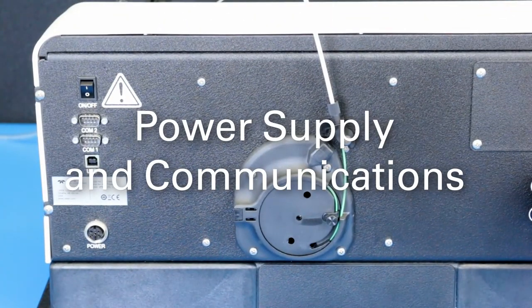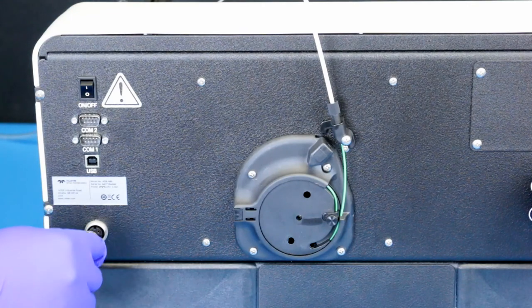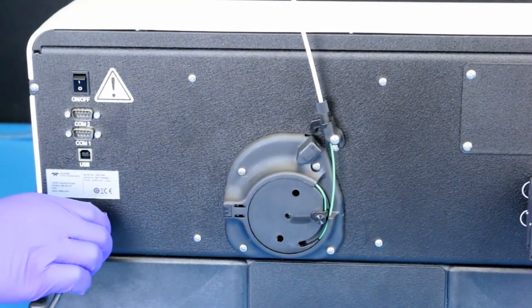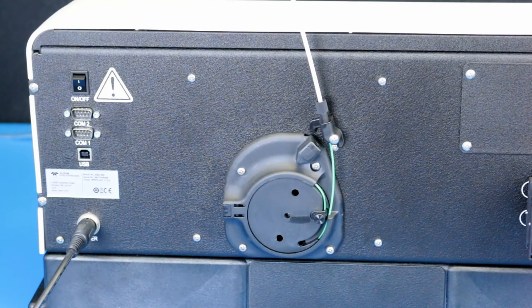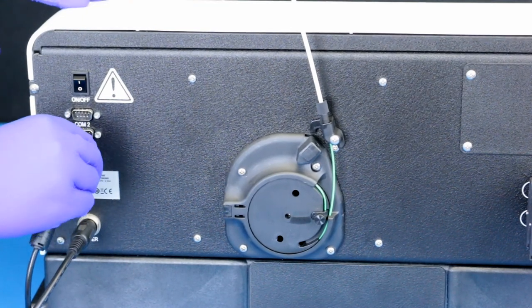Power supply and communications. Plug the power supply into the power connector on the auto sampler. Connect either the USB or the serial cable between the host computer and the auto sampler.